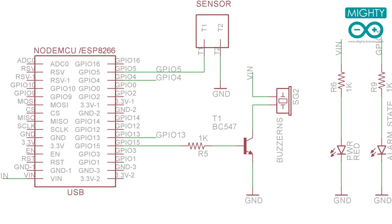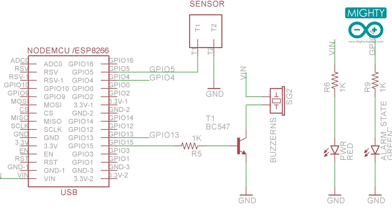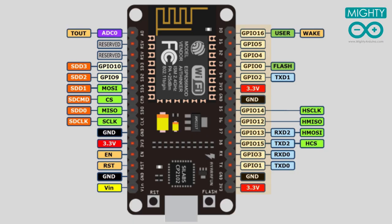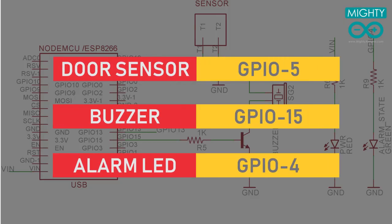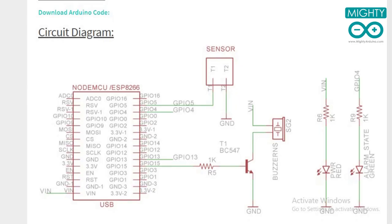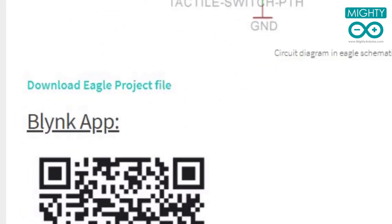We will begin with connecting the NodeMCU to different components in EagleSchematics. For connections, use the GPIO pin number instead of the digital pin number, as most software like Arduino IDE recognizes GPIO pin numbers only. Here are the important connections to note: the magnetic door sensor is connected to GPIO pin 5, the buzzer is connected to GPIO 15, and the alarm state LED is connected to GPIO 4. You can download the schematics and Eagle project file from my website — link is in the description.